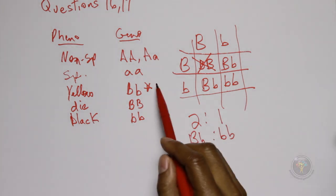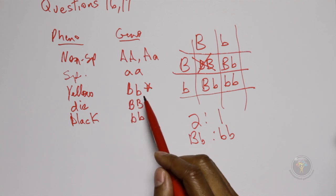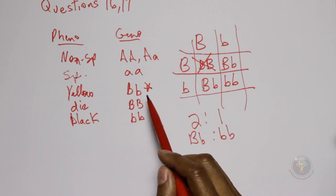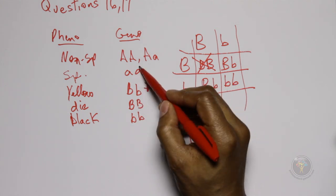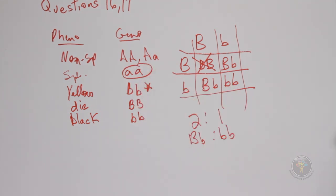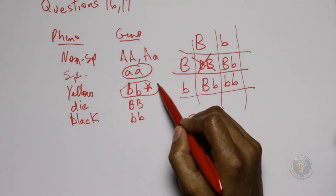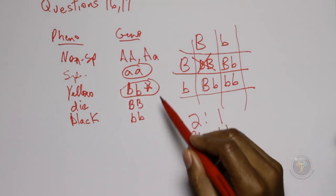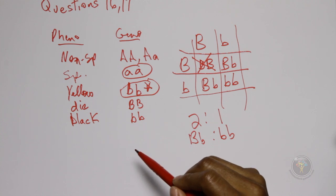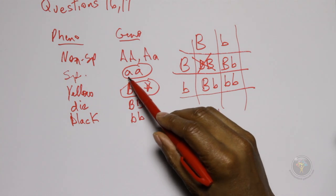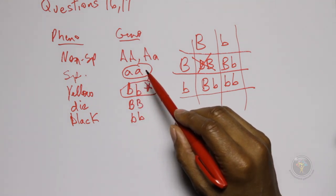Then 17, two yellow coated, so it's yellow coated again, it would have to be Bb, spotted mice were crossed repeatedly. Spotted means it must be aa. Of the offspring, the phenotypes of offspring would likely include. Okay, so we're repeating crosses between this and this. These are independently sorting genes.